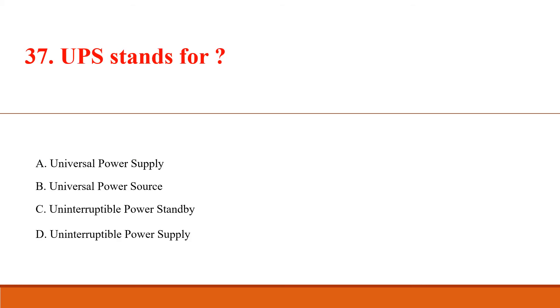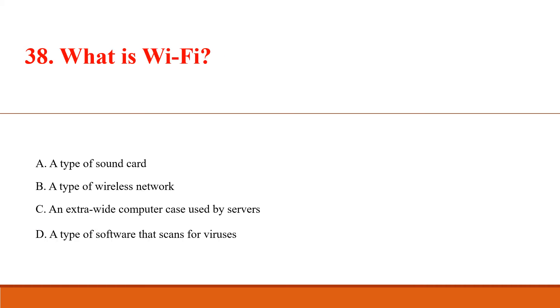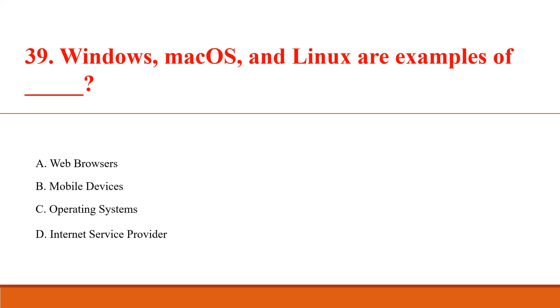UPS stands for? Answer Option D: Uninterruptible Power Supply. What is Wi-Fi? Answer Option B: A type of wireless network. Windows, Mac OS and Linux are examples of? Answer Option C: Operating systems.